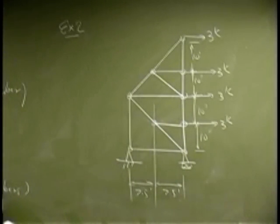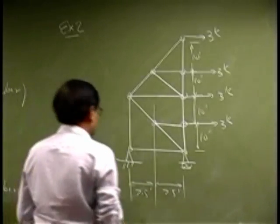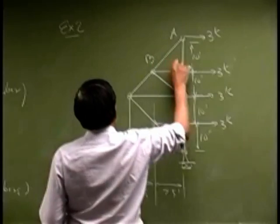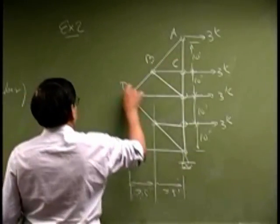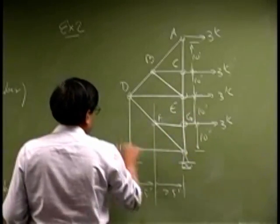Okay, so here is the truss and you have the forces at 3 kips. Then you have number of joints as A, B, C, D, E, F, G, H, and R.